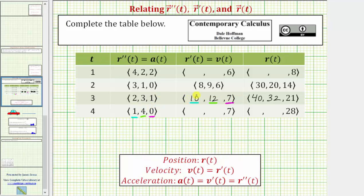The starting velocity in the x direction is 10. For the next second, the acceleration in the x direction is one meter per second squared, which increases the velocity by one. Ten plus one is 11. At t equals four seconds, the velocity in the x direction is 11 meters per second. The starting velocity in the y direction is 12 meters per second. For the next second, the acceleration is four meters per second squared, which increases the velocity by four. Twelve plus four is 16. The velocity is 16 meters per second in the y direction.